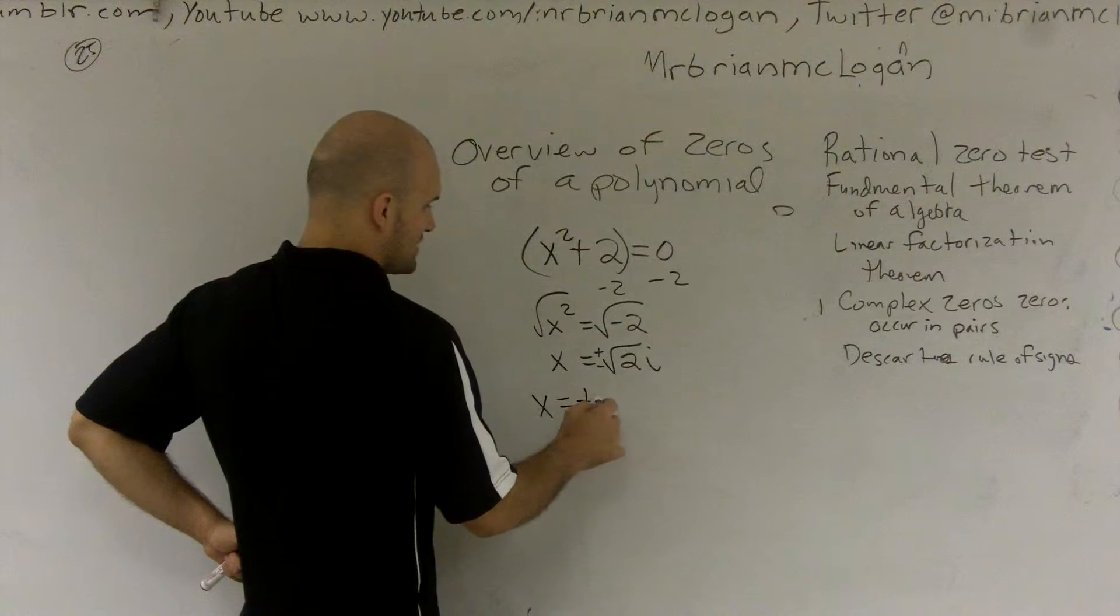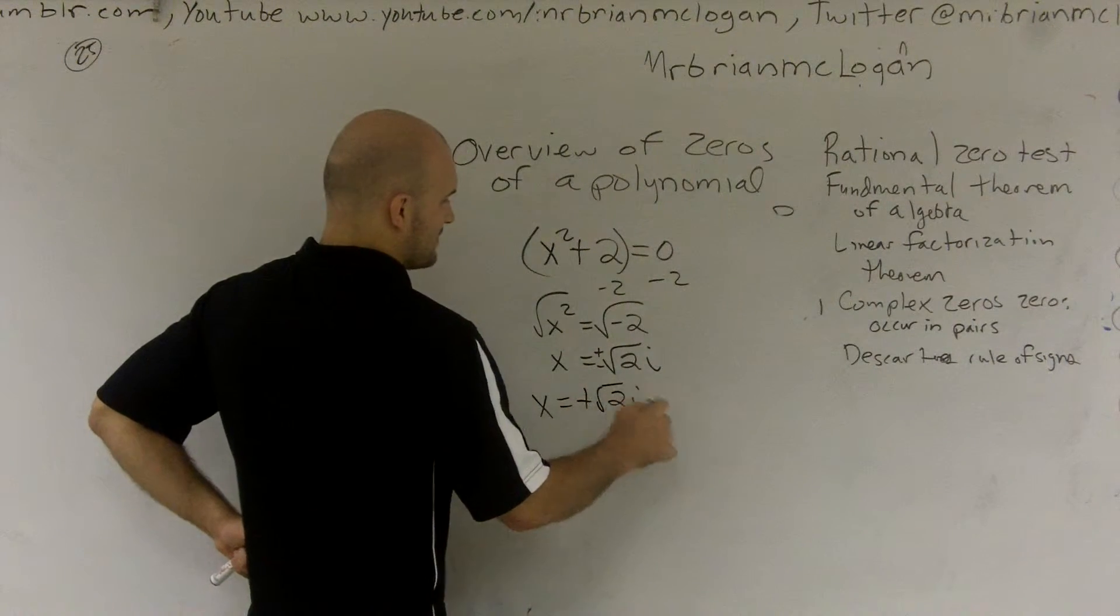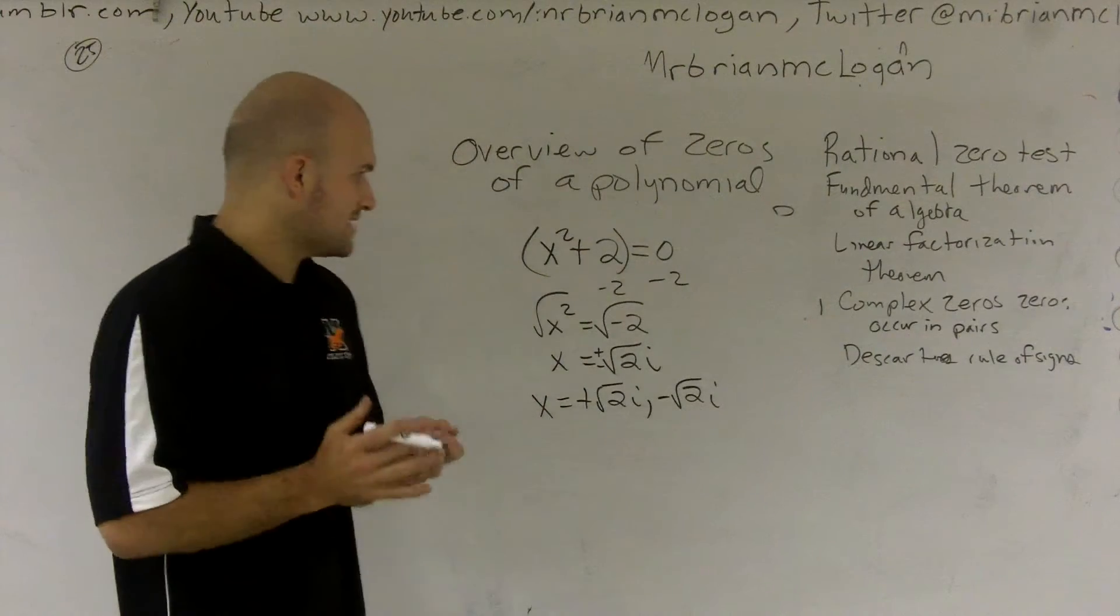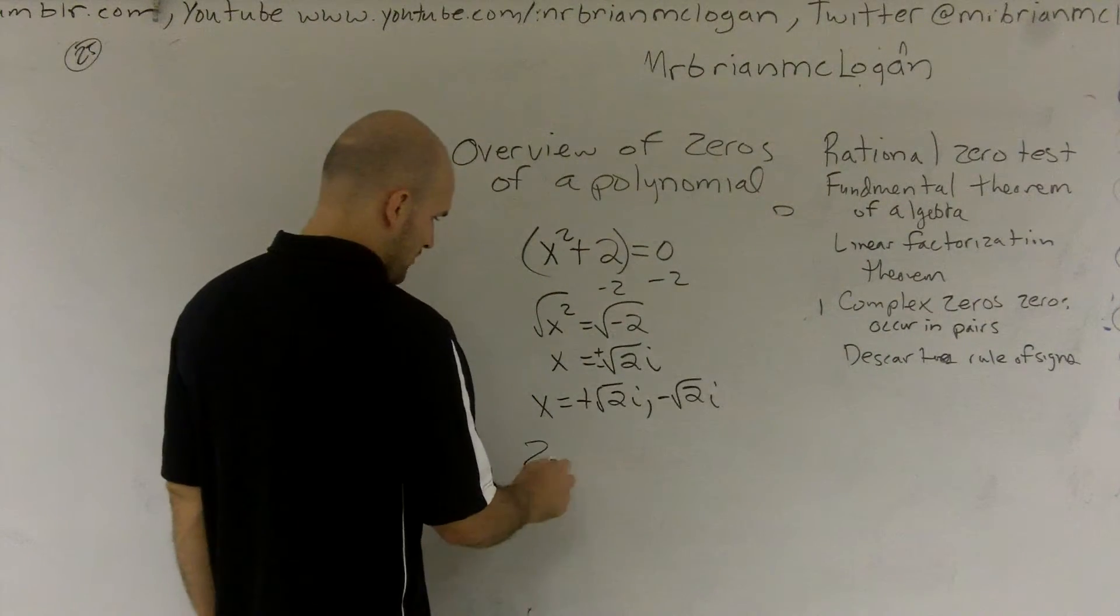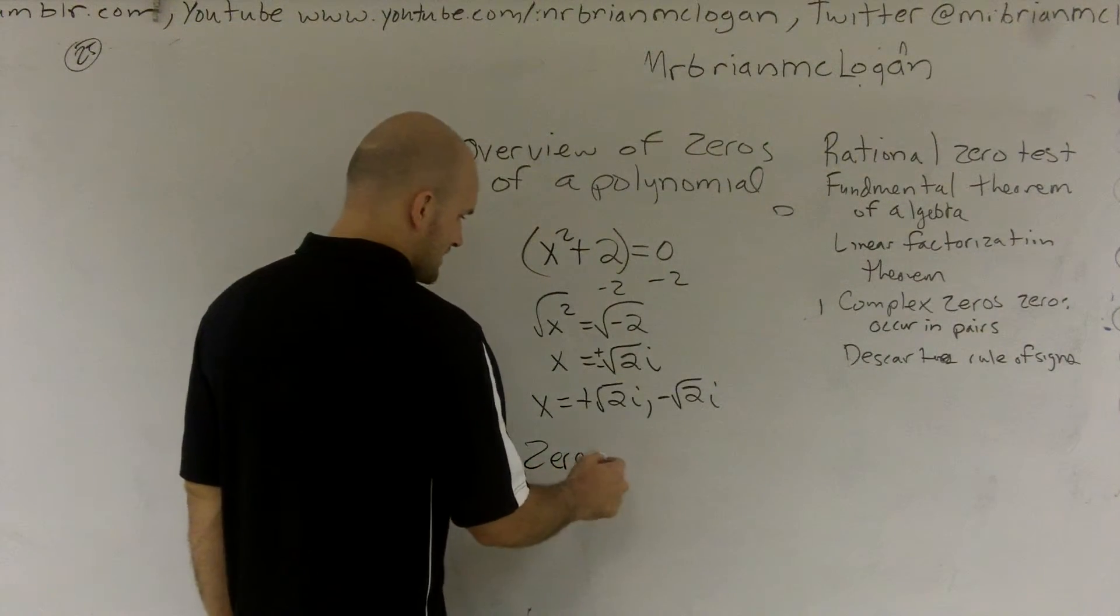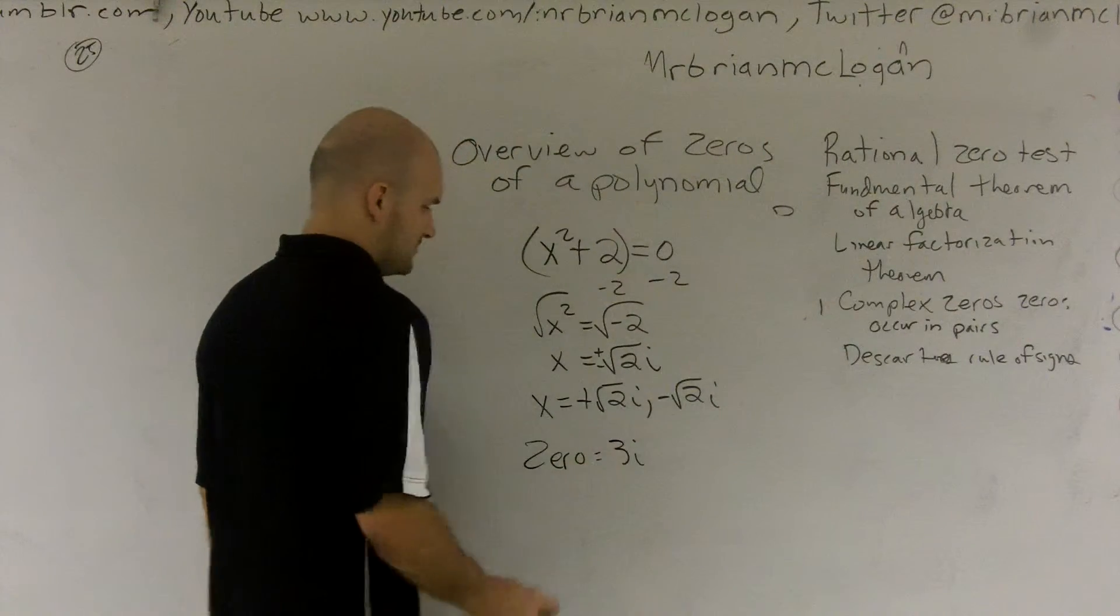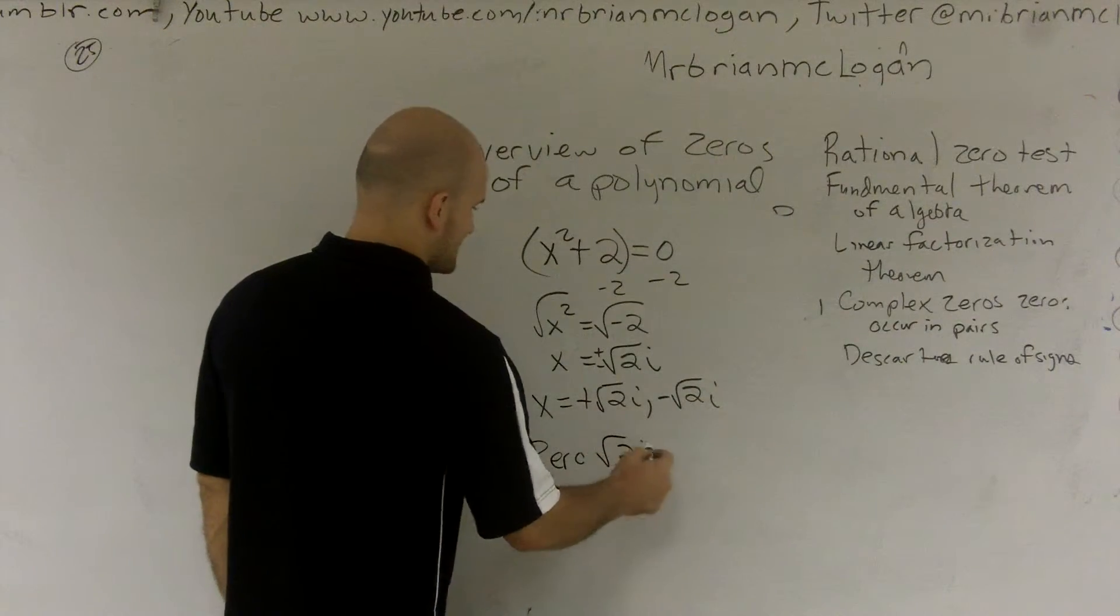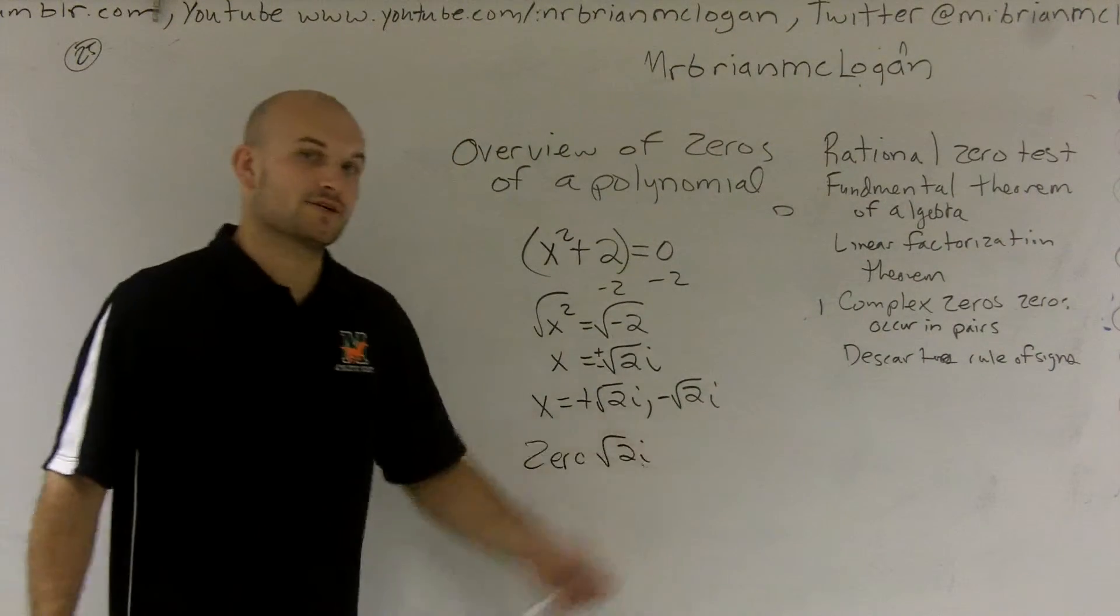What I'm trying to tell you is, so that means x = +√(2i) and -√(2i). One thing you've got to understand, if I say there's a zero and one of your zeros is √(2i), if I just tell you one zero,